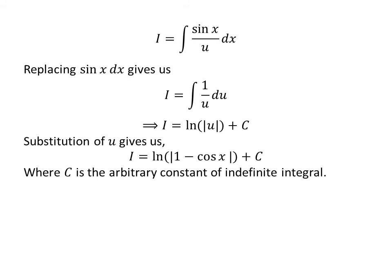Let us substitute u in terms of x. As we had assumed u is equal to 1 minus cosine x. So, I is equal to natural log of absolute value of 1 minus cosine x plus capital C.